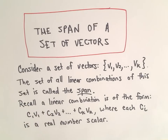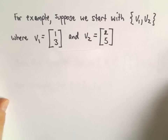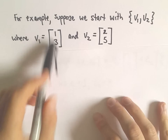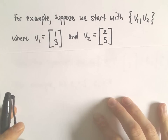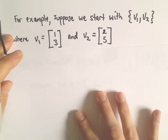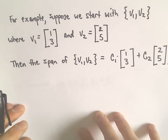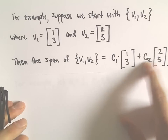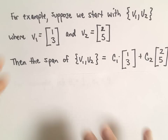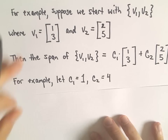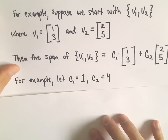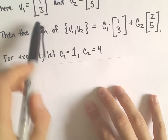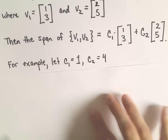I've picked a couple of vectors here — nothing special about these, just to give a little bit of intuition. Suppose we start with two vectors: the vector [1, 3] and the vector [2, 5]. These would be vectors in R2. If we think about the span of those vectors, we can write the span as c sub 1 times [1, 3] plus c sub 2 times [2, 5]. I've picked constants 1 and 4 at random to create some new vectors.